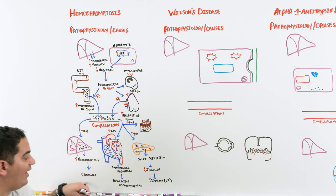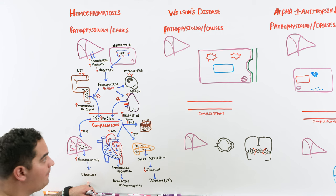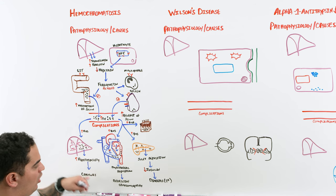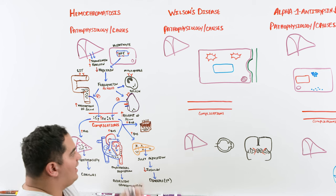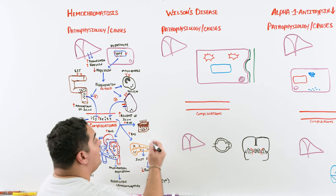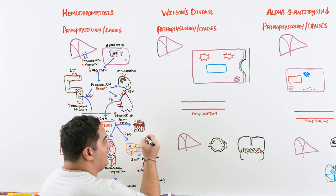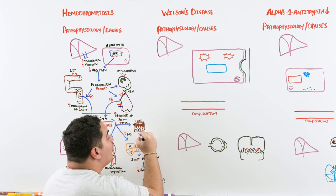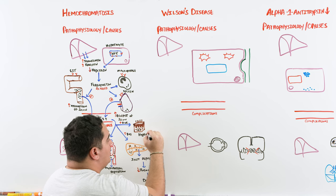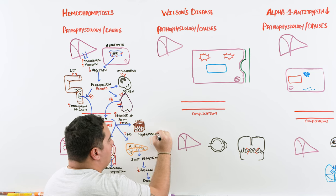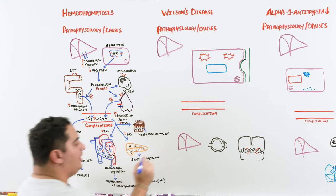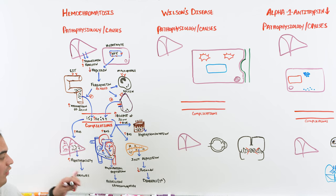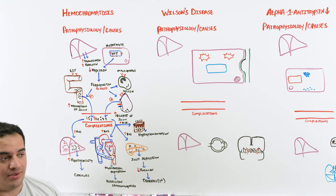Lastly, iron can deposit in the skin. When iron deposits in the skin, it gives it a hyperpigmented appearance. So watch out for hyperpigmentation, diabetes, restrictive cardiomyopathy, and cirrhosis in a patient with hemochromatosis.